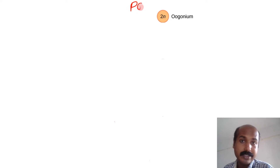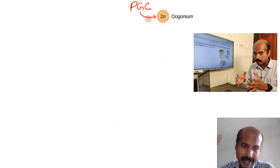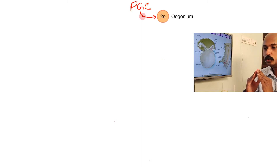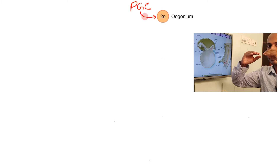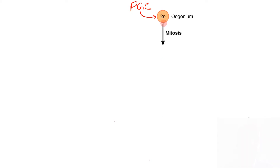Oogonia are developed from primordial germ cells, which migrate from the yolk sac through the dorsal mesentery into the primitive gonad during the early weeks of intrauterine life. There, they divide into oogonia. The oogonium undergoes repeated cycles of mitosis to form what is called the primary oocyte — similar to how a spermatogonium forms a primary spermatocyte.